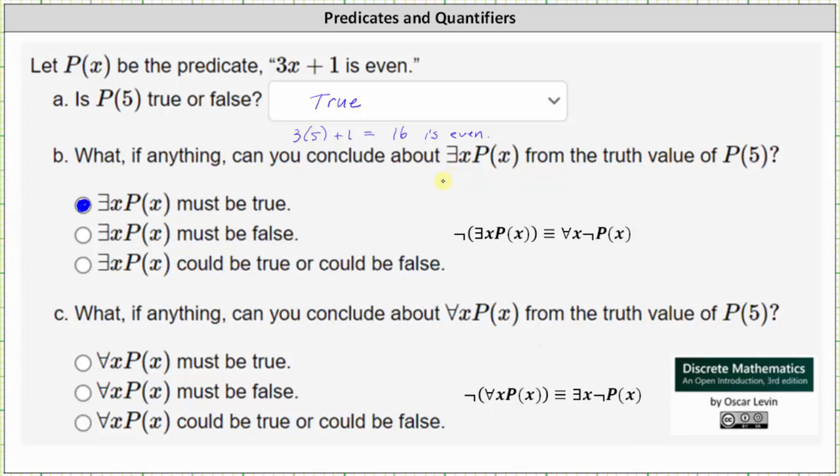For part c, what, if anything, can you conclude about for every x, P of x is true, meaning for every x, 3x plus 1 is even, from the truth value of P of 5?